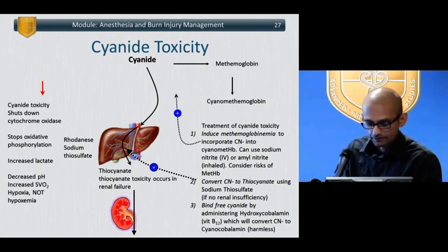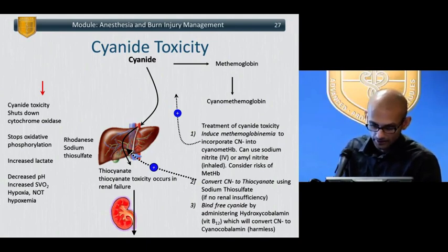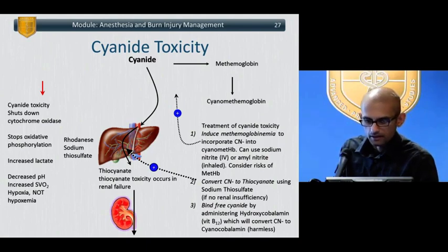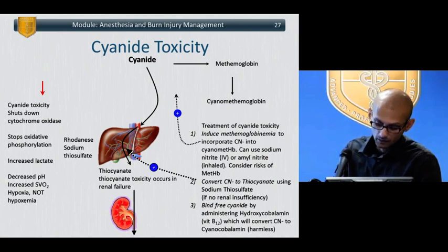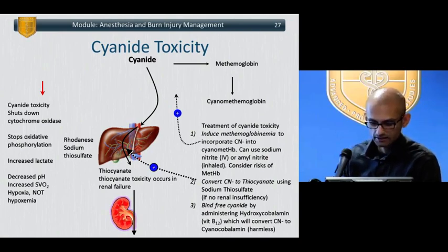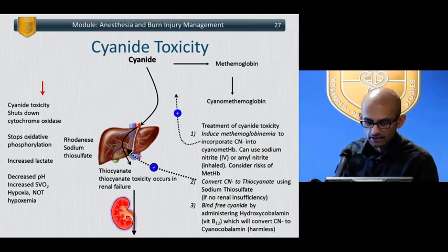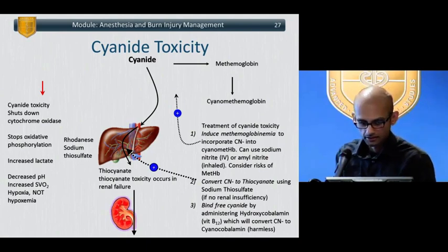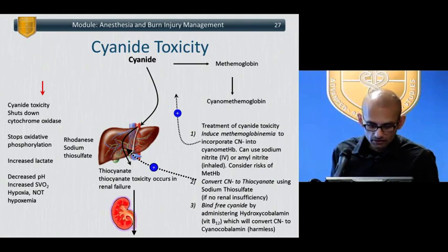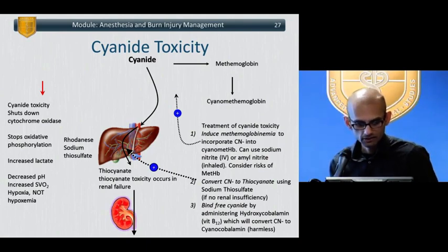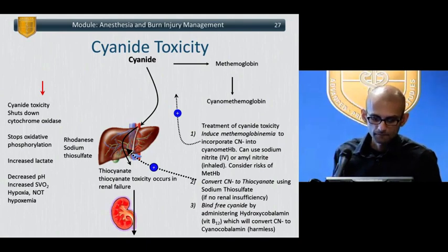Cyanide poisoning in and of itself is far worse because cyanide shuts down oxidative phosphorylation, creating a state of tissue hypoxia even when plenty of oxygen is present — it poisons the mitochondria. As a result, there is increased anaerobic respiration, metabolic acidosis, lactate production, decreased pH, and an increase in SVO2. Remember that SVO2 increases because all that oxygen floating around in the body cannot be used.